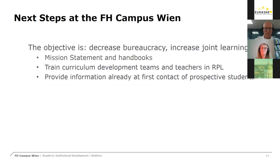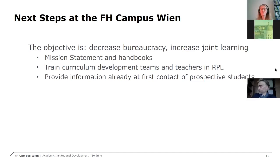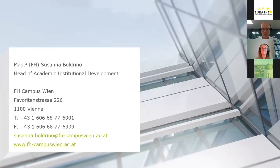The next steps at FH Campus Wien: our main objective is to decrease bureaucracy and create an understanding of joint learning. We will formulate an RPL mission statement corresponding to our culture, as well as handbooks for program directors, students, and teachers. We will train curriculum development teams, and provide information for students from the very beginning of the student life cycle and in between. If something is still open, I'm looking forward to your questions. Thank you for your attention.